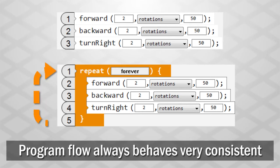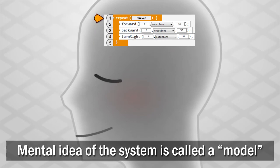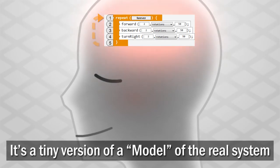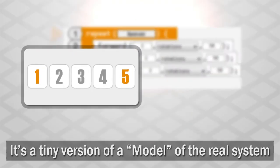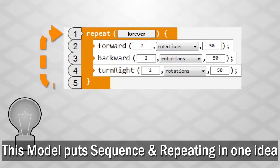This mental idea of how the system works is called a model. It's like a tiny model version in your head of how the real system operates. This model explains sequence and repeating in a single idea.